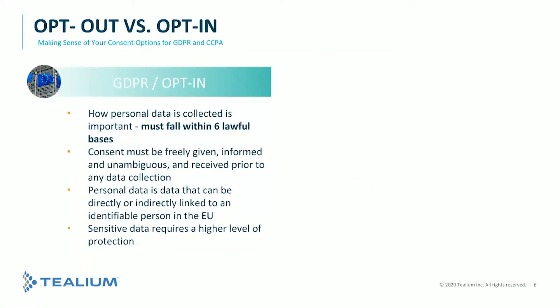The right to opt-out is what we'll be spending a lot of time on today. Julian will walk us through the differences between opt-in under GDPR and opt-out under CCPA. Within GDPR, as you may know, there are six lawful bases — one of which is consent-driven, meaning we need to opt-in in order to gather or track data. The others include contracts, legal obligation, vital interests, public tasks, and legitimate interests. We'll have all six documented in the appendix.